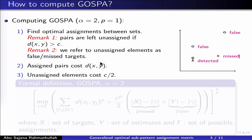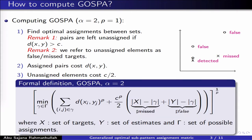Every assigned pair then costs d — that is, whatever the distance is between the two vectors — whereas all the unassigned elements cost c over 2. Formally, and for a general value of p, we can write this as a minimization over all sets of assignments gamma of the following criterion. Here we use x to denote the set of true targets and y to denote the set of target estimates. The first term is the total localization cost for all assigned pairs (x_i, y_j), whereas the second term is the cost for all unassigned elements.